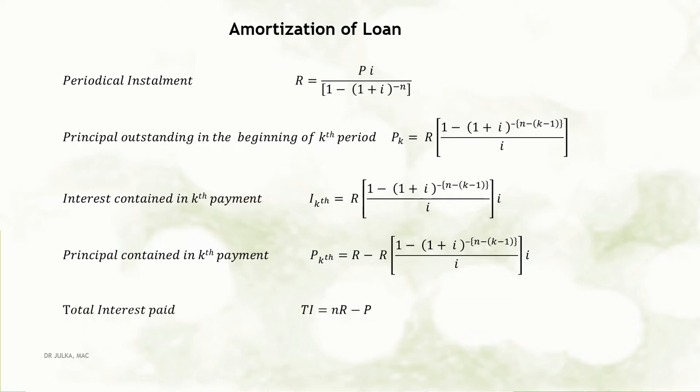Principal contained in the kth payment can be calculated using the formula: installment amount minus interest contained in the kth payment. Total interest paid can be calculated using the formula: amount of installment multiplied by number of installments minus present value.